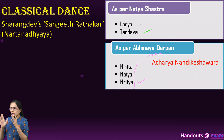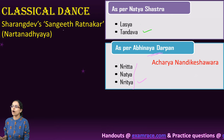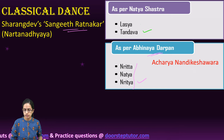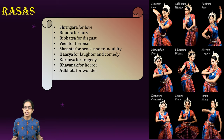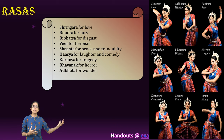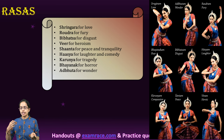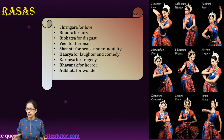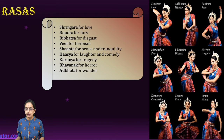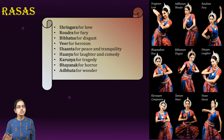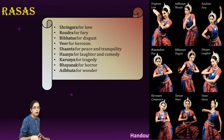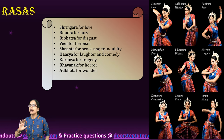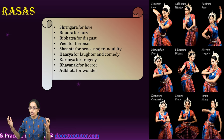The Nartan Dhyan, which is Sharngadeva's version of the Sangeet Ratnakar, talks about various forms, rituals, and Rasas associated with each dance. These include Shringar Rasa — the rasa of love; Rudra — fury; Vibhatsa — disgust; Veer — heroism; Shanta — peacefulness; Hasya — comedy or laughter; Karuna — tragic aspects; Bhayanaka — horror; and Adbhuta — wonder.